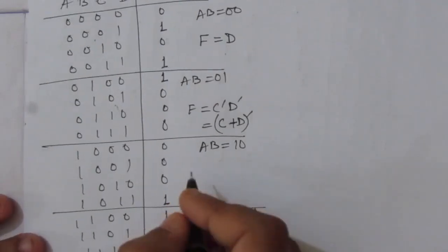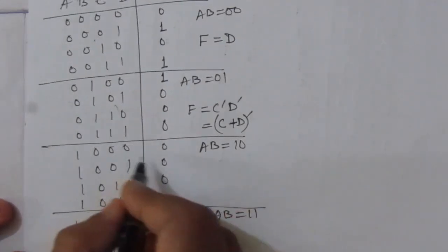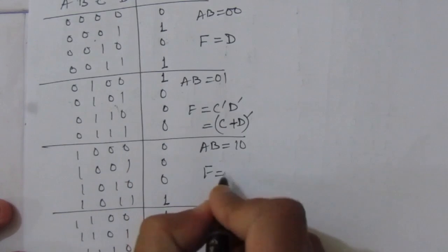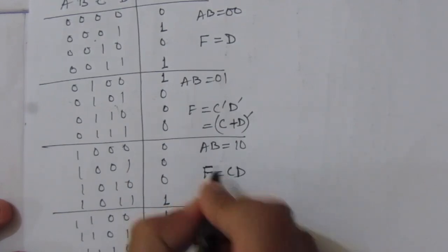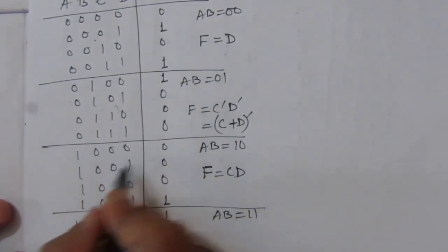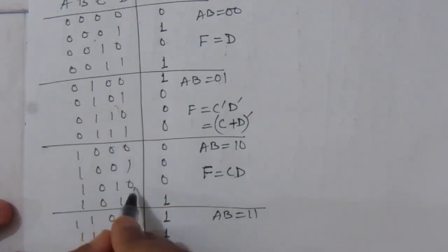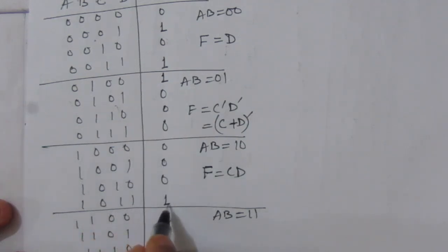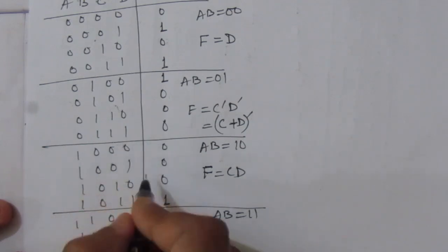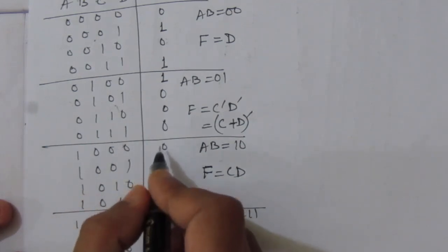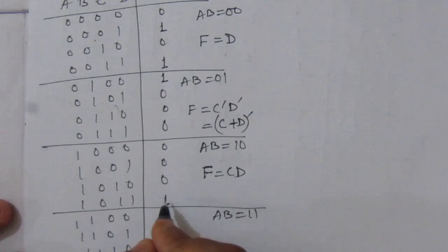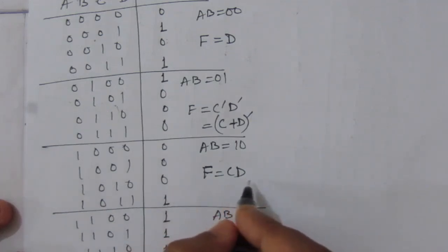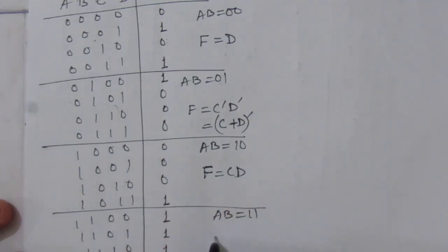Then for the third case, if we write F equal to C·D: C·D means 0 times 0 is 0, 0 times 1 is 0, 1 times 0 is 0, and 1 times 1 is 1. That means C and D are related to the output F in terms of AND operation, so C·D. And for the last case, we can see that all the output values are 1, so we can directly write it as 1.